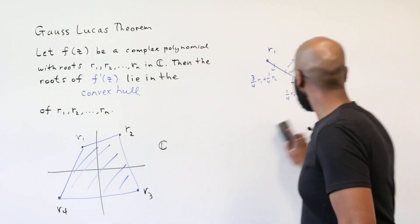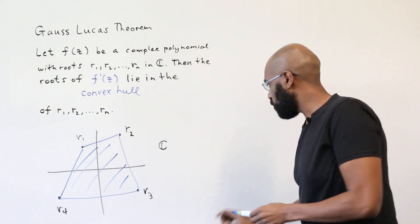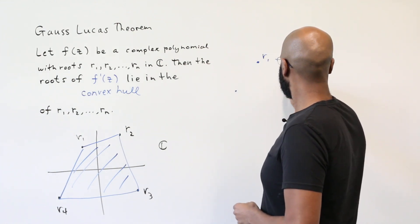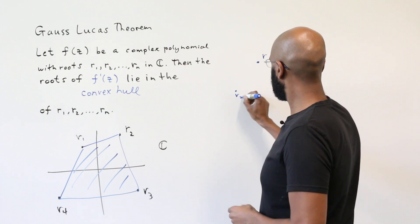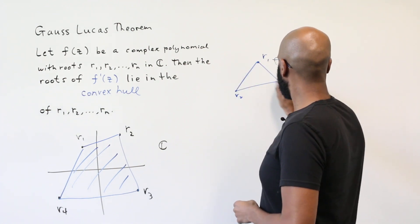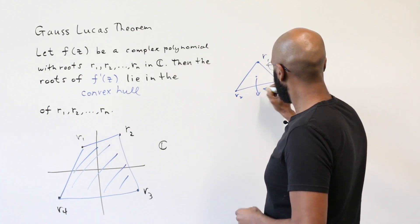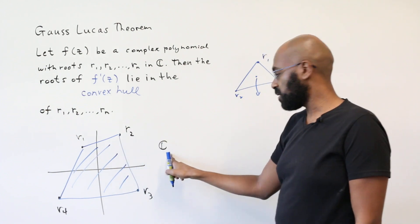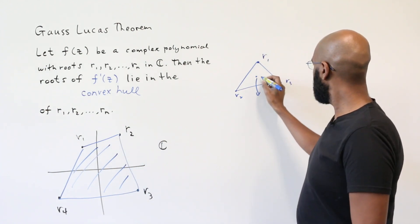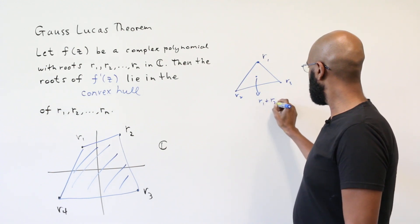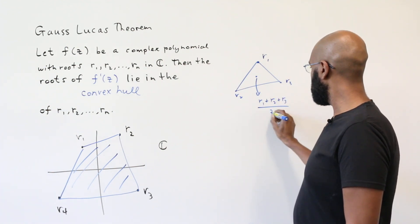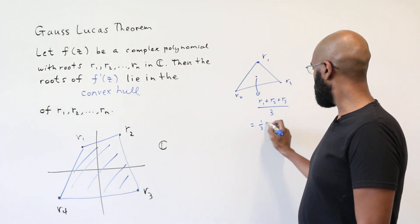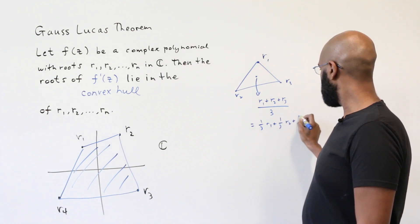And this phenomenon generalizes. Let's say we had three points r1, r2, r3. Then the center of mass of these points, somewhere over here, if we think about these as being written as vectors in the complex plane with two components, then this thing would be the average of these and it actually literally is the average as complex numbers. And this is a third r1 plus a third r2 plus a third r3.